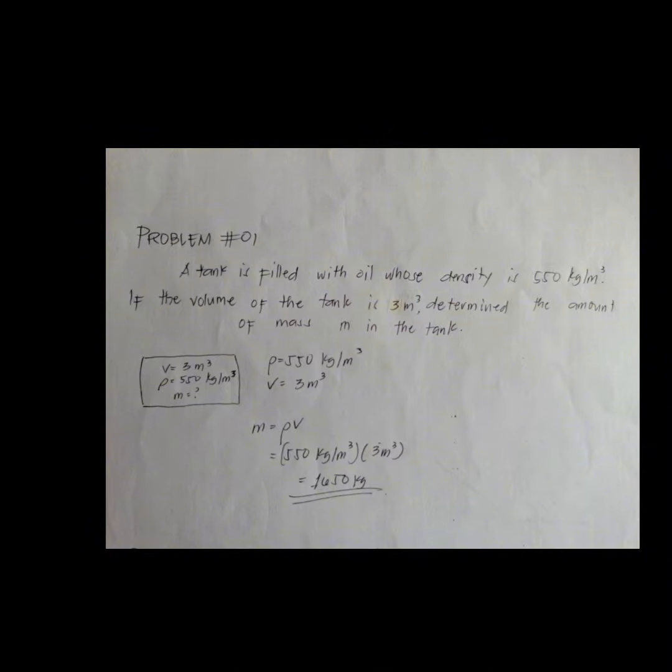Whatever calculation we do, we should end up with the unit of kilograms. Putting the given information into perspective, we have the density is equal to 550 kilogram per cubic meter and the volume is three cubic meters.